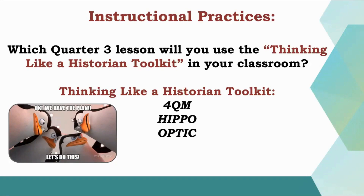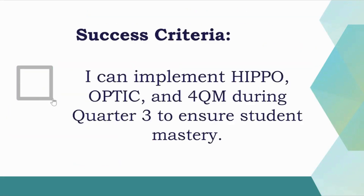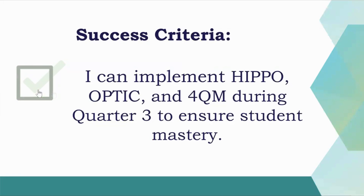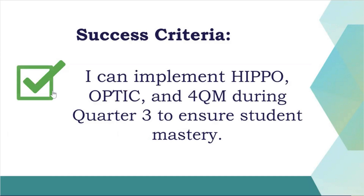Which Quarter Three lesson will you use the Thinking Like a Historian toolkit in your classroom? There's room on your participant guide to answer this question. Plan and think about where you could use this. It will take some time, but once you have planned you should be able to meet the success criteria: I can implement HIPPO, OPTIC, and 4QM during Quarter Three to ensure student mastery. That concludes our training — thank you, it was a pleasure and an honor having you.